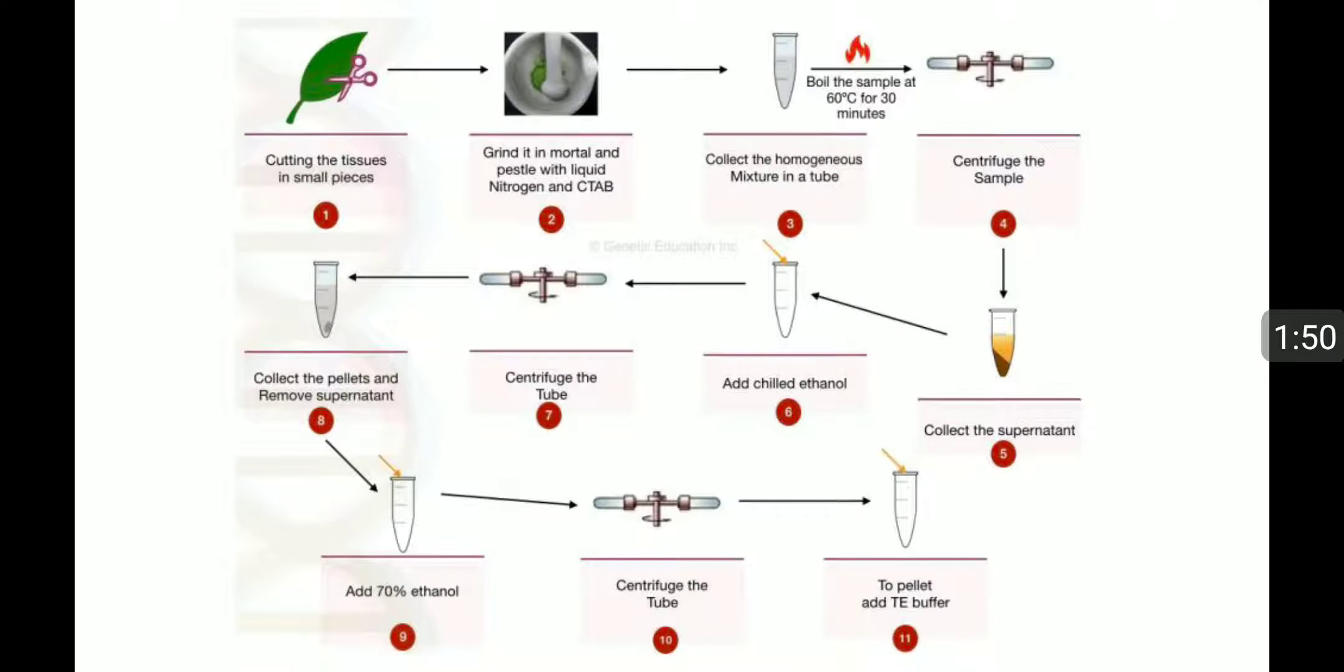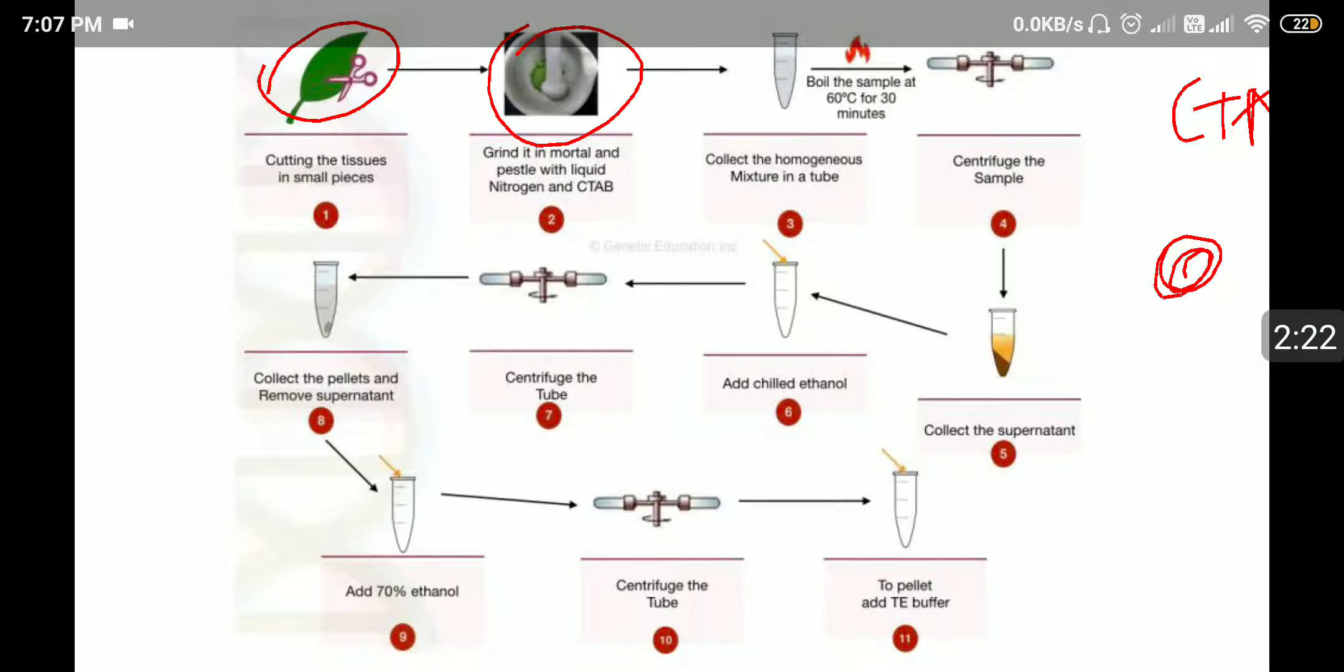This is the simple procedure. First, we need to cut the tissues and grind with the pestle and mortar with the help of CTAB buffer and liquid nitrogen. CTAB is an extraction chemical. After grinding well in the pestle and mortar, it should appear like a liquid.